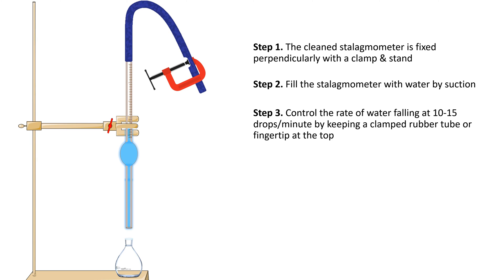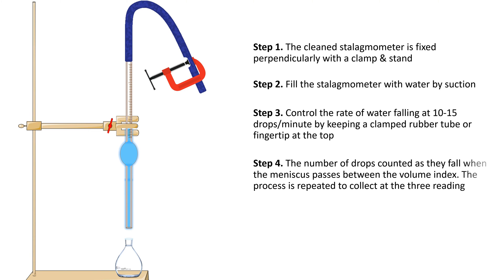Step 4: The number of drops counted as they fall when the meniscus passes between the volume index. The process is repeated to collect at the three readings.